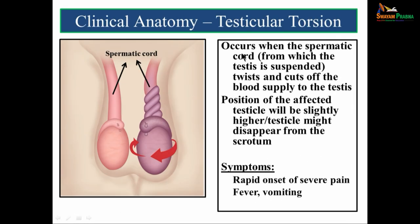Testicular torsion occurs when the spermatic cord twists and cuts off the blood supply to the testis. The affected testicle will be positioned slightly higher or may disappear from the scrotum. Treatment is to gently untwist the spermatic cord. Symptoms include rapid onset of severe pain in the testis, and the condition may be associated with fever and vomiting.